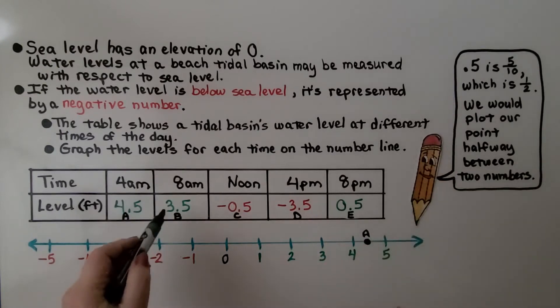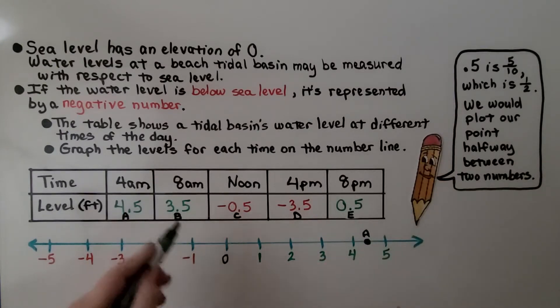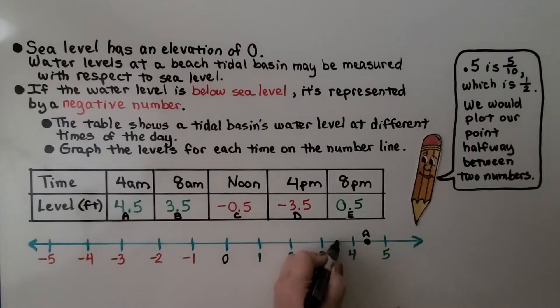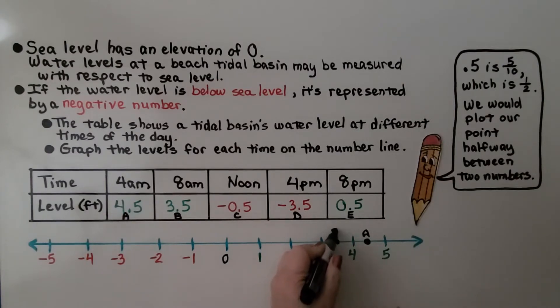B is positive 3.5. That's greater than 3, so it would be in between 3 and 4 — that would be B.